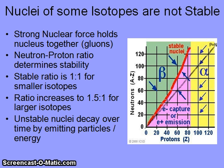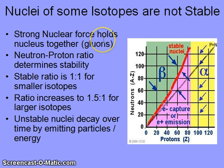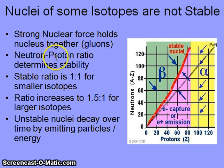Now let's consider the strong nuclear force. This is made possible by fundamental particles called gluons, and it's what holds together the nucleus. As you start building larger and larger nuclei, you start having more and more protons. And because they all have like charges, they are going to repel each other. So it's very important to consider the neutron-proton ratio in the nucleus, as this is going to determine the stability of an atom.